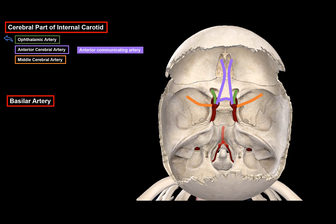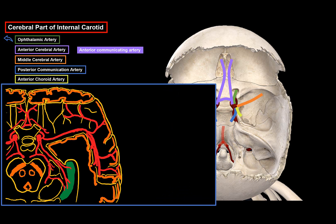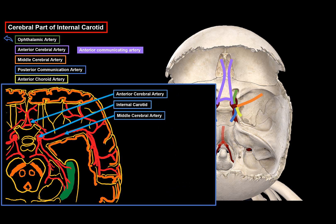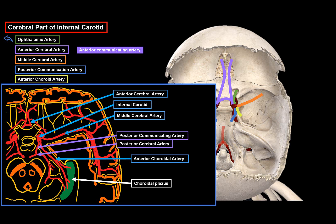The posterior communicating artery simply communicates with the posterior cerebral artery. The anterior choroid artery is very important — originating from the internal carotid along with the anterior and middle cerebral arteries, it travels backwards to form mainly the choroid plexus in the lateral and third ventricles.